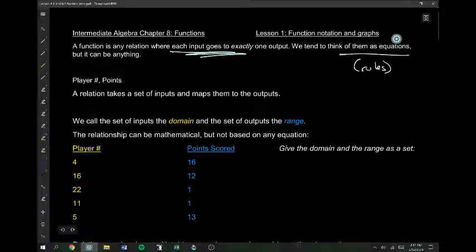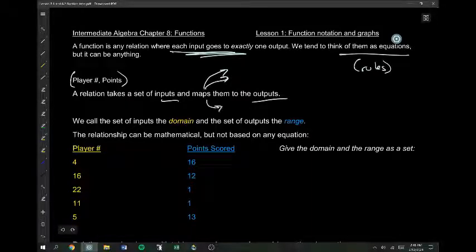A common simple example is just a player and a sport. I can have a function where the input is player number and the output is the points. And I can make a relation that takes the set of inputs and maps them to the set of the outputs. Maps is just a way of saying like gets to or points to or how it moves from one to the next.